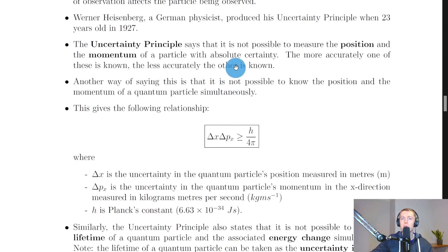The uncertainty principle says that it is not possible to measure the position and the momentum of a particle with absolute certainty. The more accurately one of these is known, the less accurately the other is known. Another way of saying this is that it is not possible to know the position and the momentum of a quantum particle simultaneously, i.e. at the same point in time.